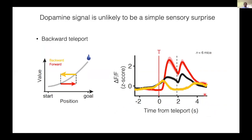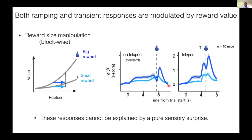We also performed a backward teleport. Backward teleport causes a sensory surprise but causes a decrease rather than an increase of value. If dopamine represents a pure sensory surprise, we should see a transient excitation similar to the forward teleport. However, the calcium signal rather decreased after a backward teleport, likely reflecting a decrease in value. Finally, we changed the magnitude of reward in blocks of trials. The trials leading to big reward showed a stronger ramping and stronger teleport. Therefore, both the ramp and transient response were scaled by the value of upcoming reward. These responses cannot be explained by a pure surprise.